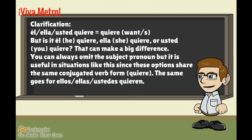However, the subject pronoun has its uses. It can be used to show emphasis, but it can also be used to clarify. You'll notice that the word 'quiere' is accompanied by él, ella, or usted. But is it 'él quiere,' 'ella quiere,' or 'usted quiere'? That can make a big difference. It is useful in situations like this since these options share the same conjugated verb form, 'quiere.' The same goes for ellos, ellas, ustedes — 'quieren.' So if in the conversation there's a lot of 'he said, she said,' you might want to clarify who's doing and saying what.